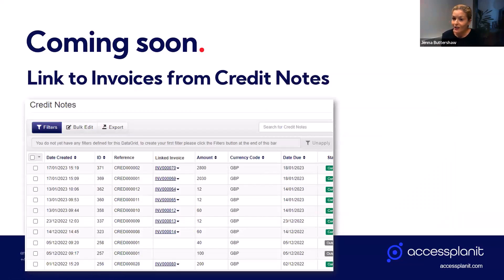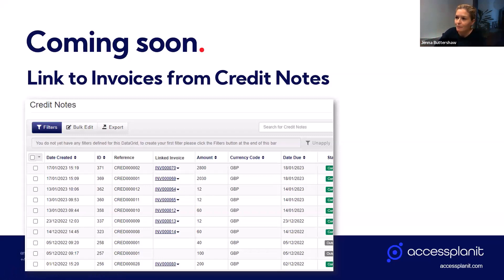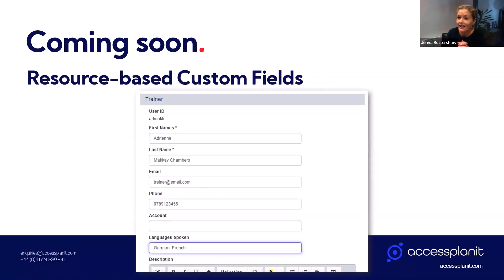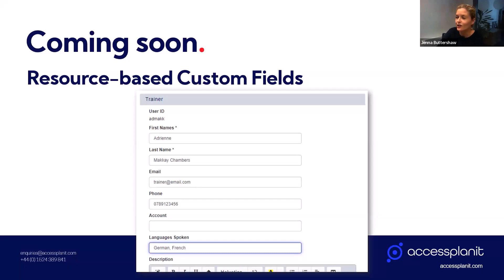We have a new column coming to the credit notes data grid to show you which invoice or invoices the credit note has been spent on — this new linked invoice column. It will also be a dynamic link, so you can click on it as a shortcut to manage your invoice. And finally, we are working on support for adding custom fields to resources. This will mean you'll be able to capture custom information about your trainers — such as what languages they deliver training in — and about your venues, such as opening hours. This information can then be reported on or used to help you select appropriate resources for each of your courses.